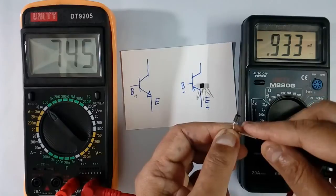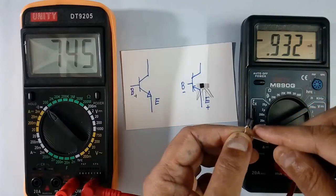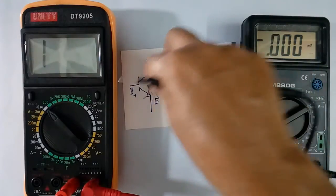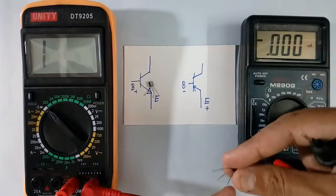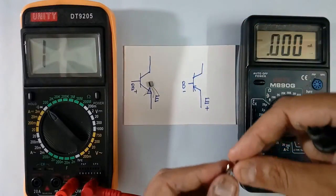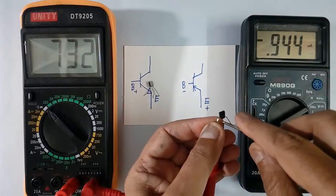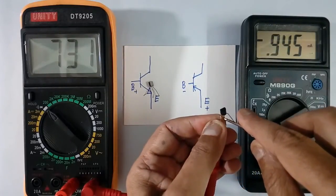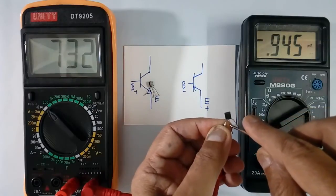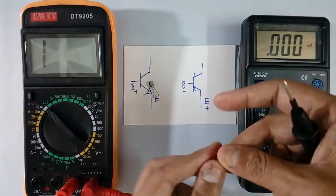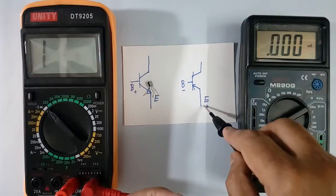It comes 745 mV at 0.932 mA. Now I will take other one. Here this emitter will be connected to positive. Another terminal here. This comes 731 mV at 0.94 mA. Remember that in PNP emitter is positive.